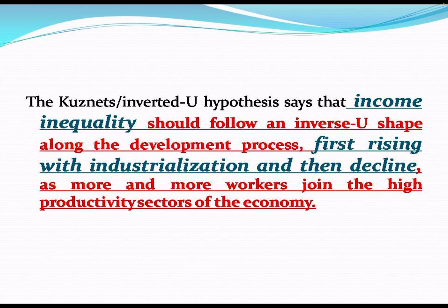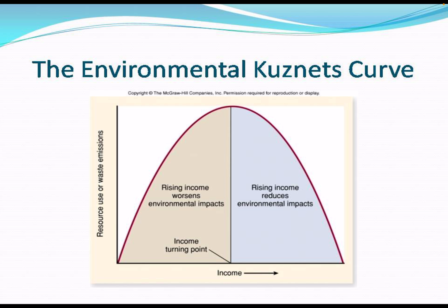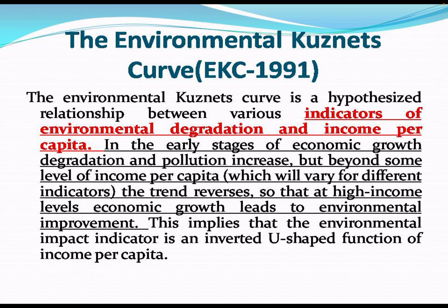For the Environmental Kuznets Curve, resource use, wastage, and emissions are on the y-axis, and income is on the x-axis. As income increases, the environmental impact first rises, leading to environmental degradation, and then eventually begins to decline as income continues to grow.